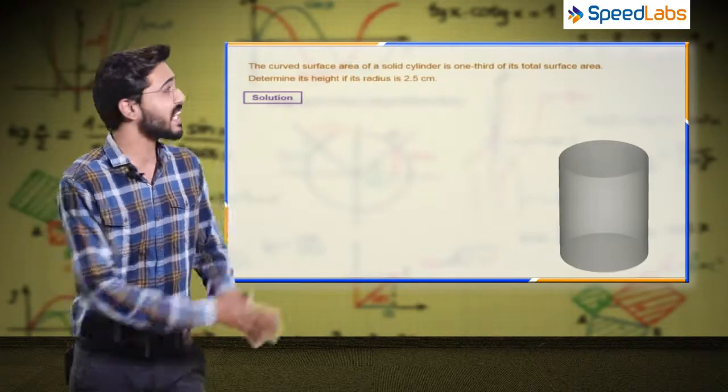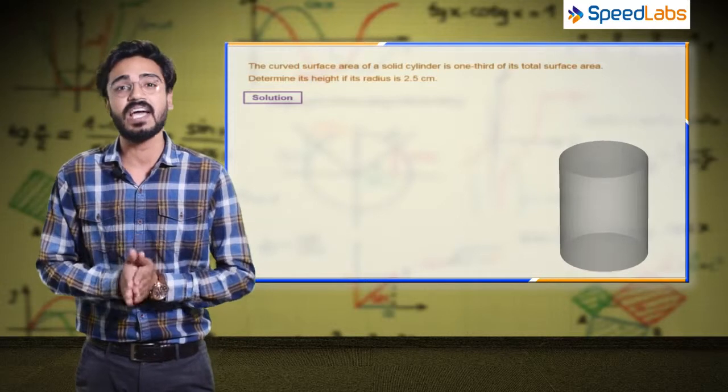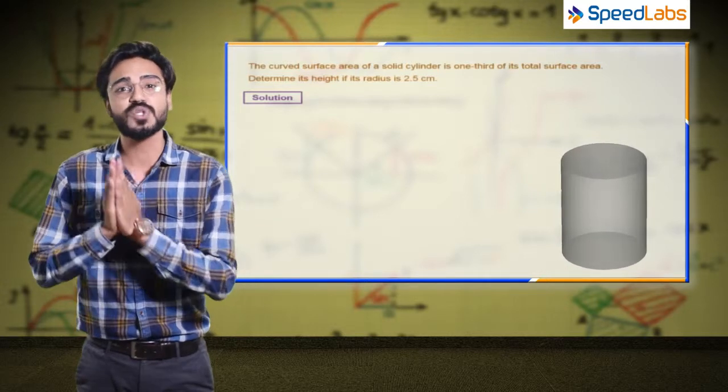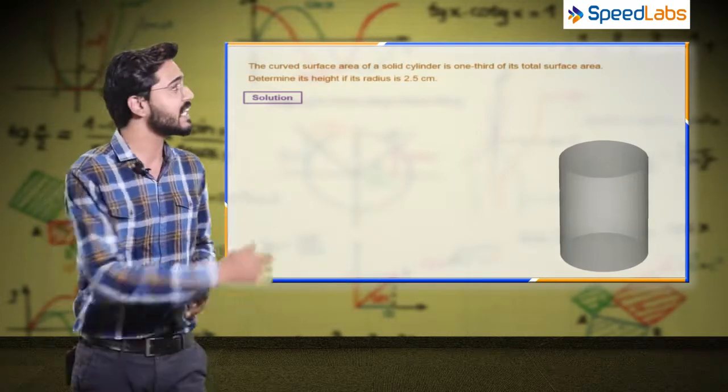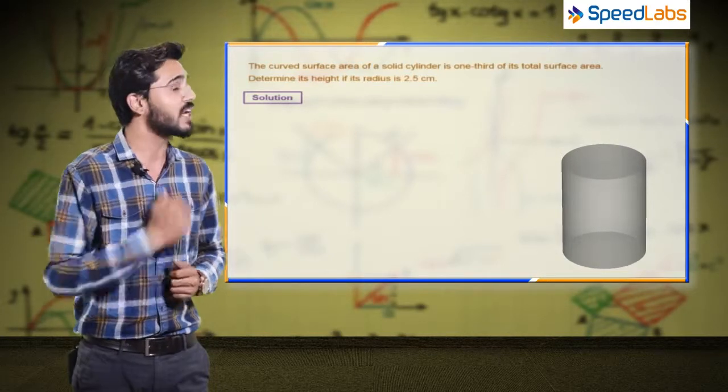In the given question, a solid cylinder is given and its curved surface area is one-third of its total surface area. Its radius is given as 2.5 centimeters and we have to calculate the height.